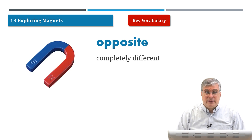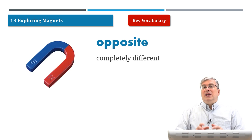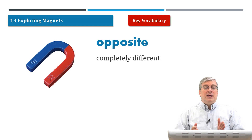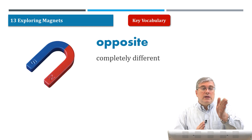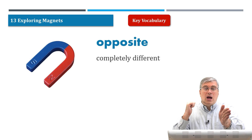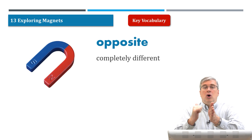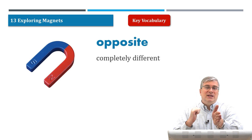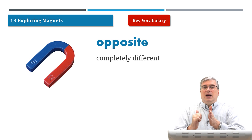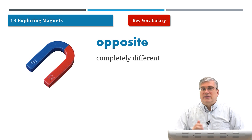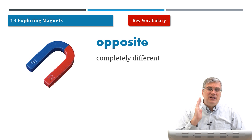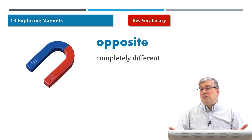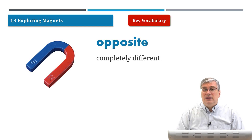Opposite. Opposite means to be completely different. If I'm going north and you're going south, we are going in opposite directions. So opposite is to be completely different from each other — completely different direction, completely different personality. There are a lot of different types of opposites.